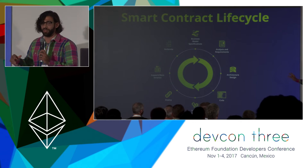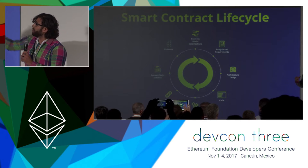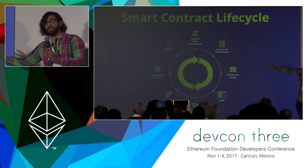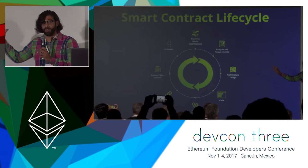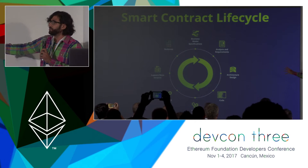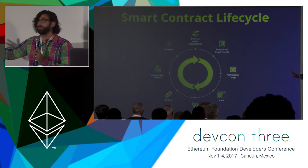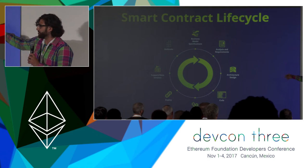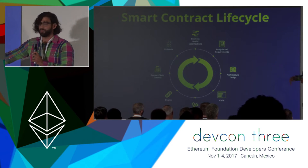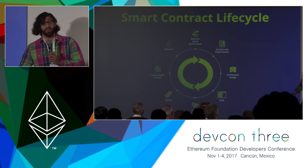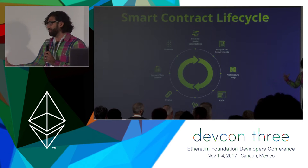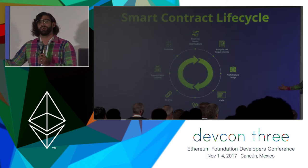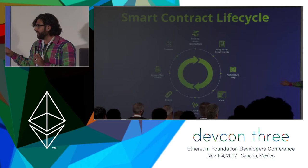I come from a project management background, so I love lifecycle. We started with the business model specifications. Currently, we're programming money essentially with smart contracts — that's a departure from traditional software depending on what you're programming and building. Analysis, requirements, architecture, design, code — that's standard. Then we get to systems testing. We are programming money, and any bug is actually catastrophic to our business model. It ruins our entire business model, so we spend a lot of time in testing.